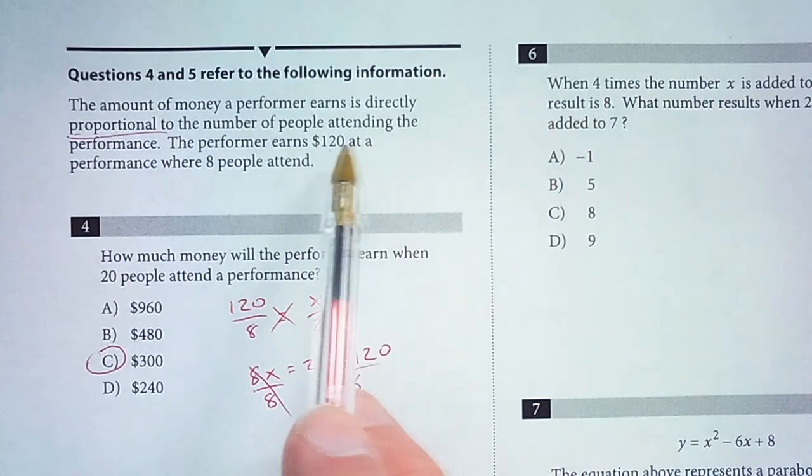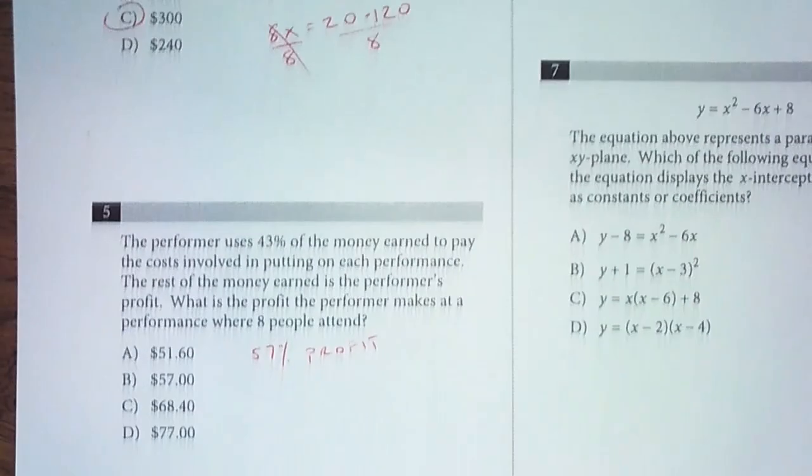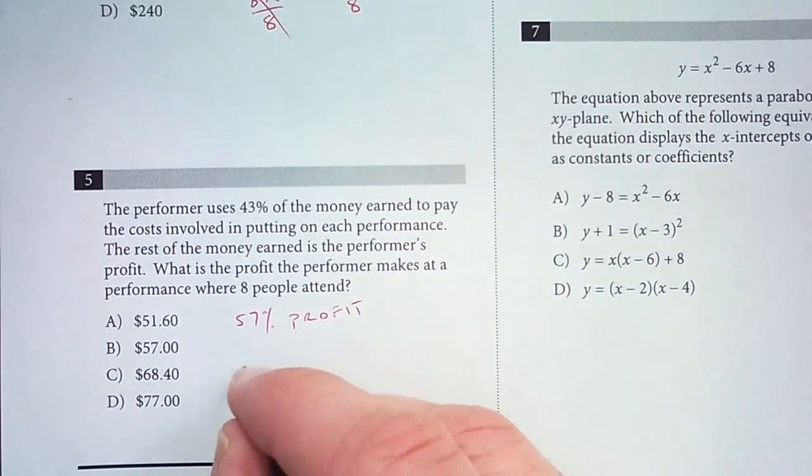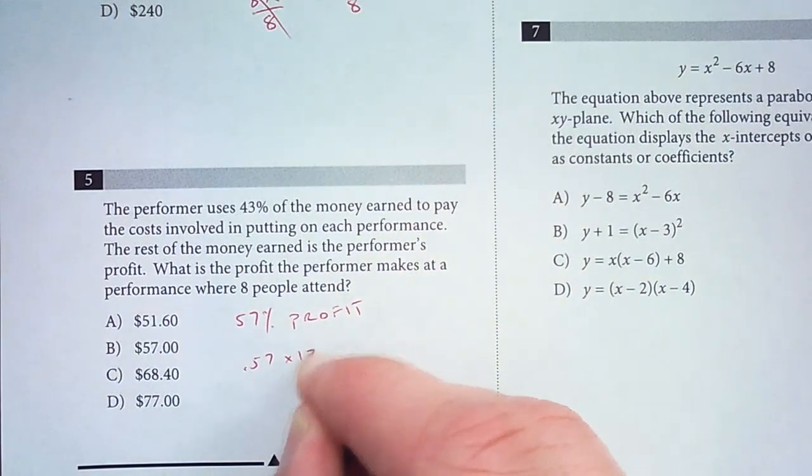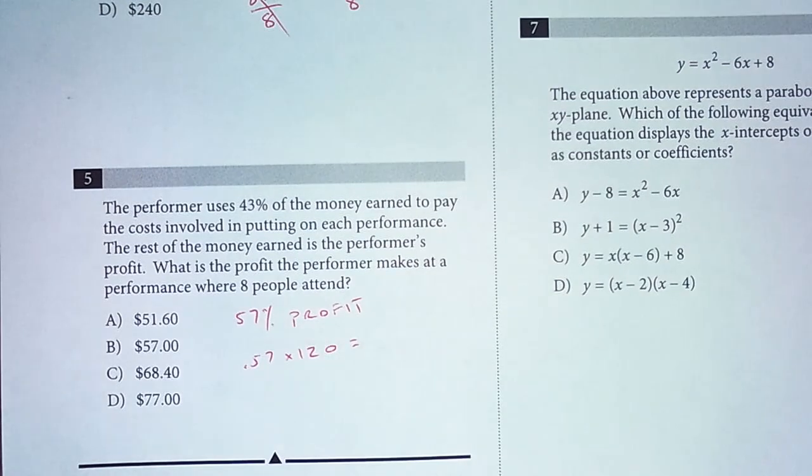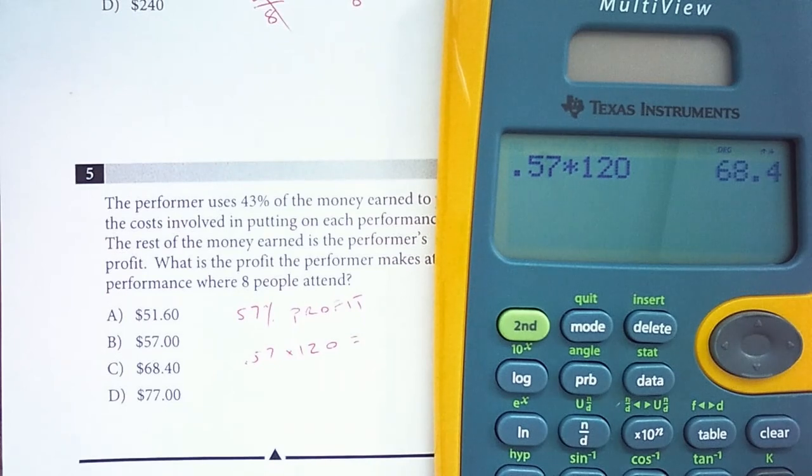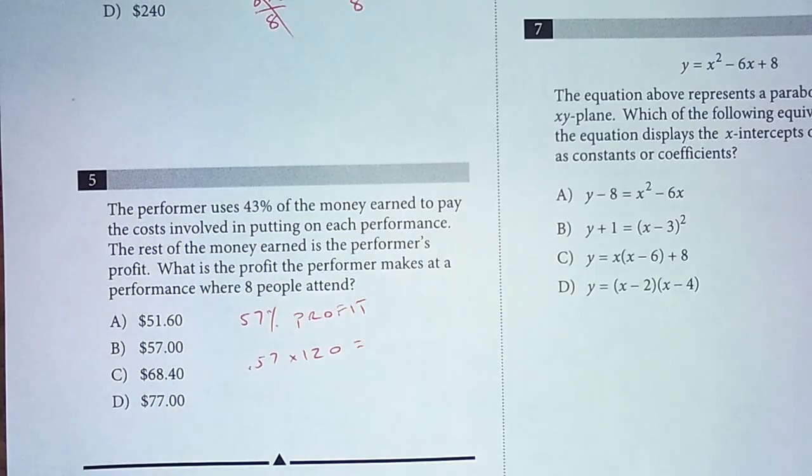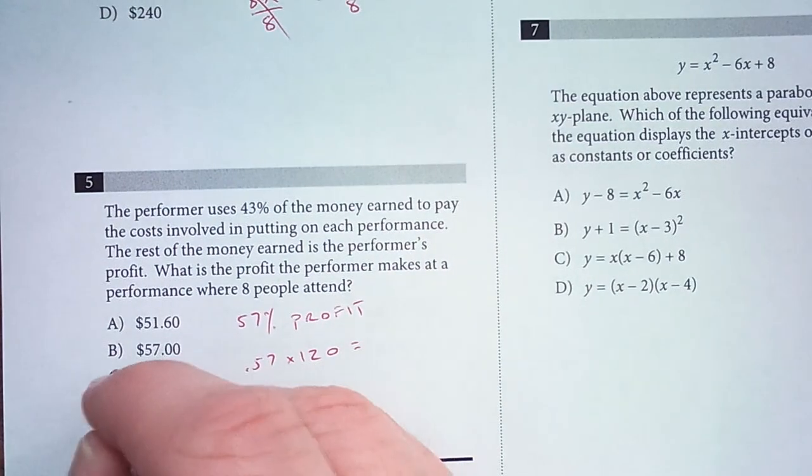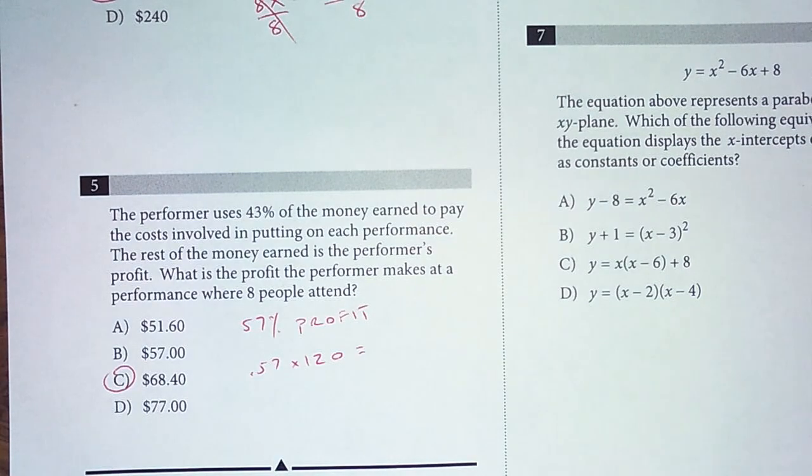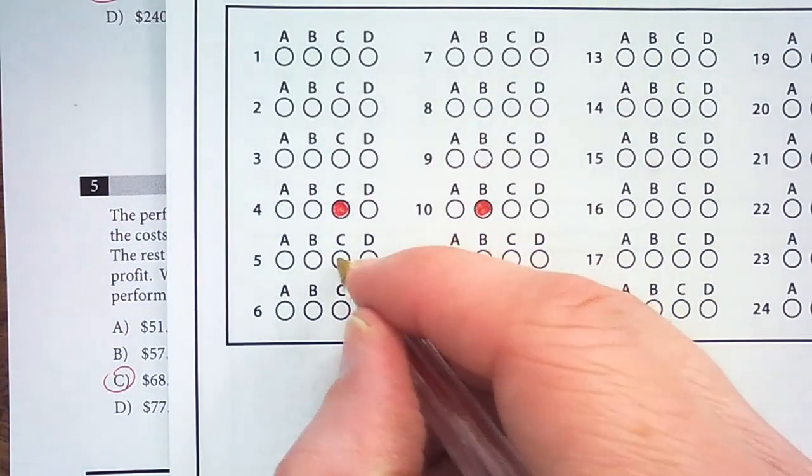When 8 people attend, $120, so 57% of 120. 0.57 times 120, and that is 68.4, so $68.40, so number 5 is option C.